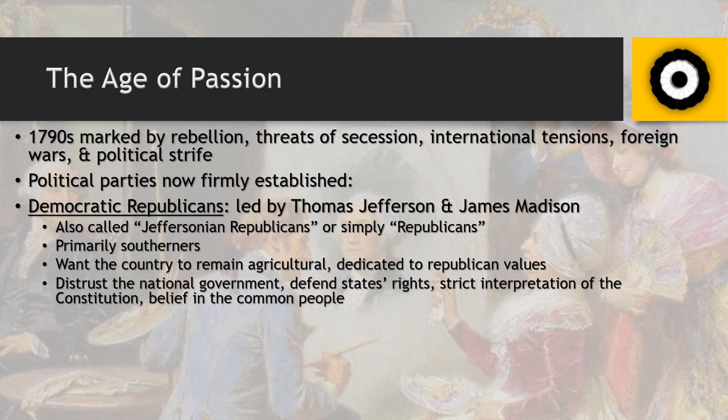The Democratic-Republicans really don't like the idea of a national government — they've already seen what a powerful national government can do under Great Britain. They prefer states' rights, a strict interpretation of the Constitution, and faith in the common people to make the right decisions. They believe these people have suffered enough under England's tyranny to be capable of governing themselves. Over time, this states' rights position becomes the defining view of the South, accompanied by the issue of slavery, ultimately leading toward the Civil War.